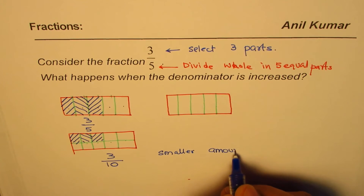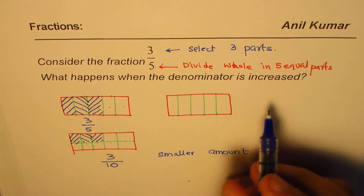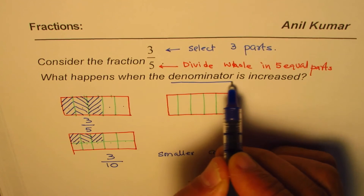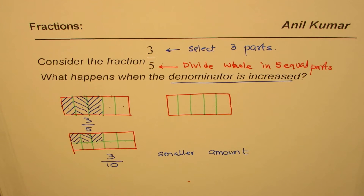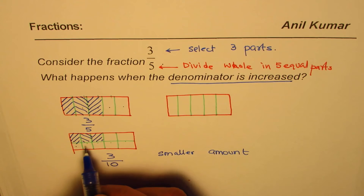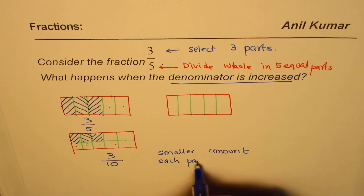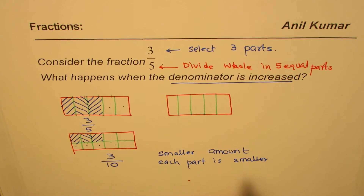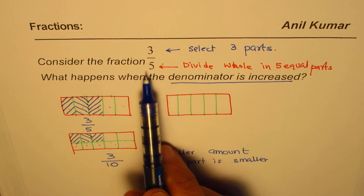It results in a smaller amount. The reason is: when the denominator is higher, the number of parts you divide into becomes more, so each part — and therefore your share — becomes smaller.